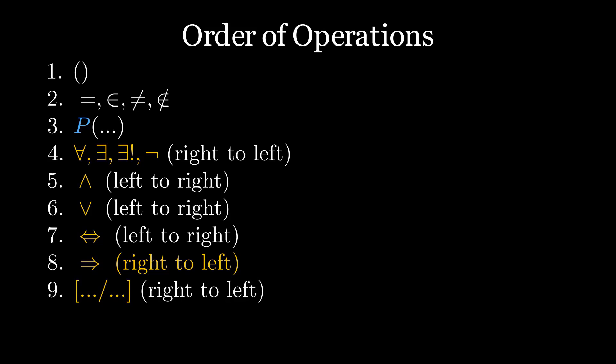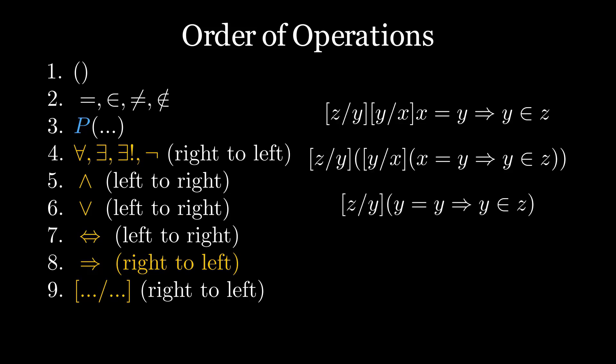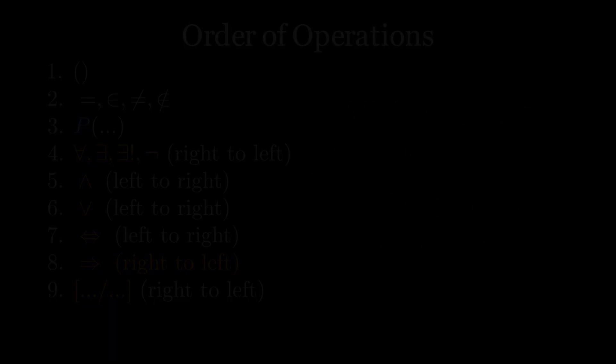Finally, we have substitution using our old notation from right to left. So this is treated like so. We evaluate the inside substitution first, replacing x with y in x equals y implies y is an element of z to get y equals y implies y is an element of z. Then we do the outside substitution, replacing y with z to get this, with z's everywhere.